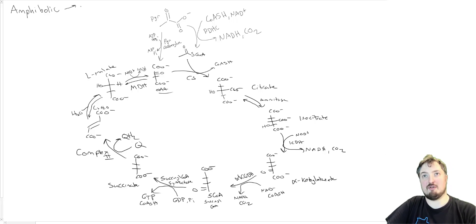The word bollic here comes from both catabolic and anabolic. That means that we are able to use the cycle to build new things and also to break things down.